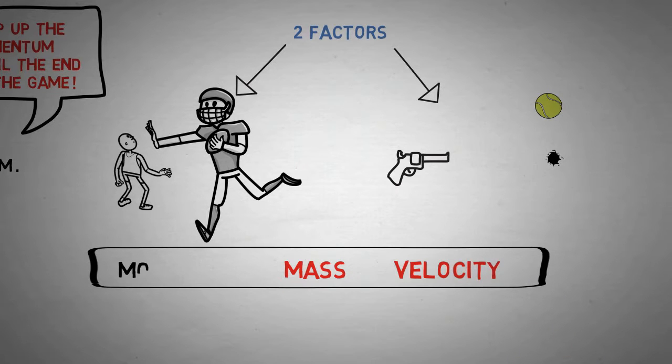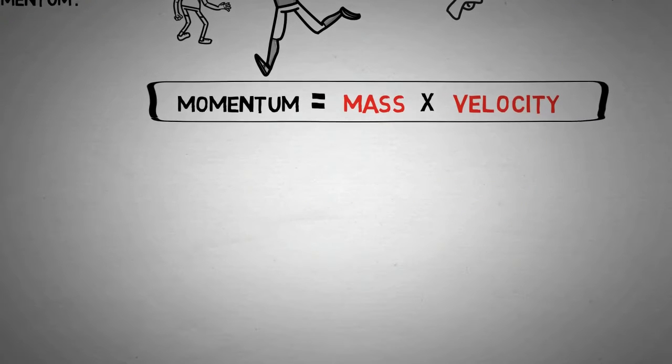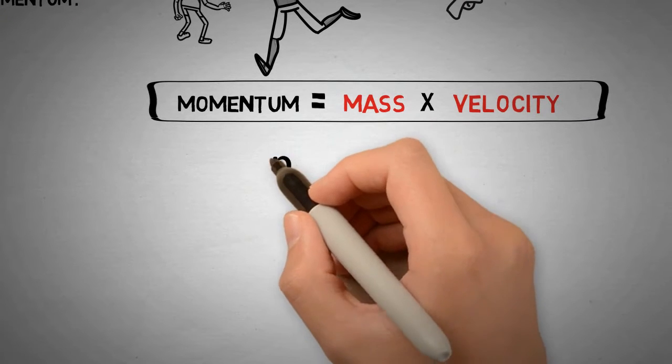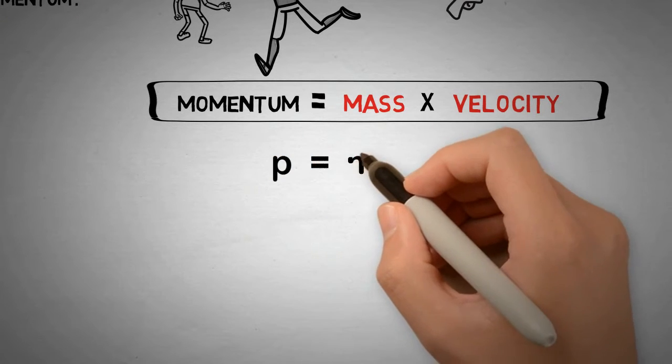So now we have the following equation. Momentum equals mass times velocity. We often give momentum the symbol lowercase p, mass m, and velocity v.